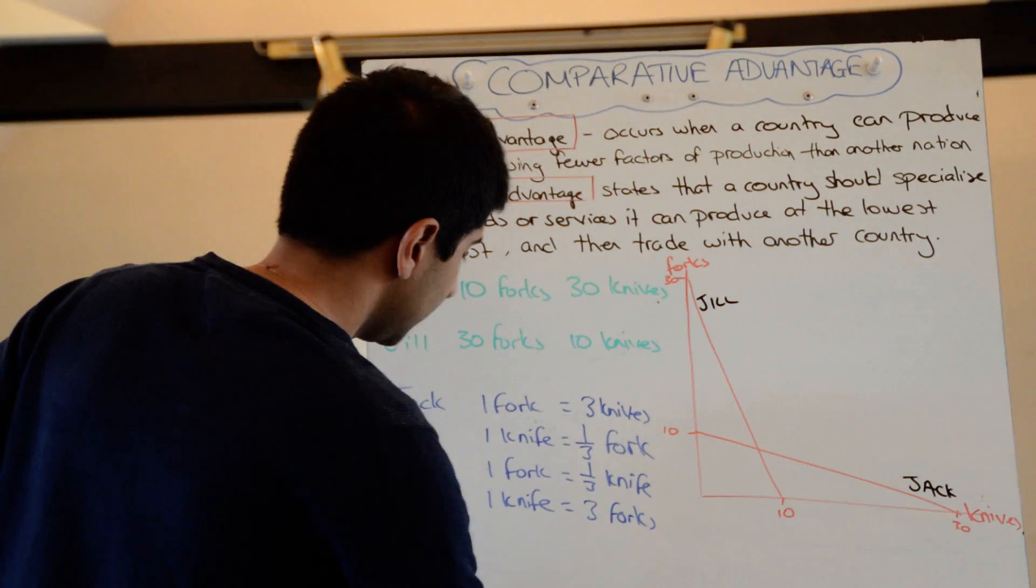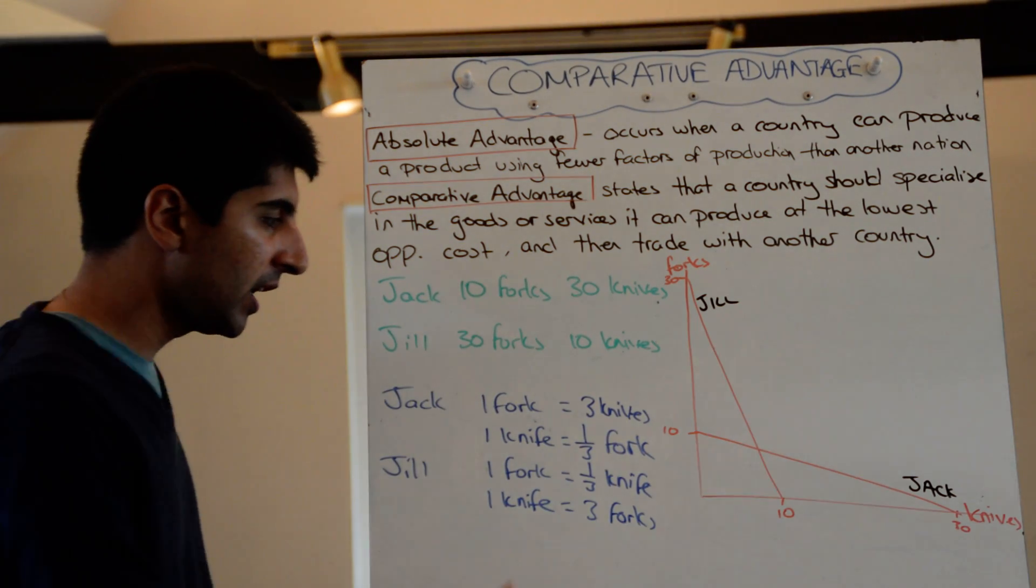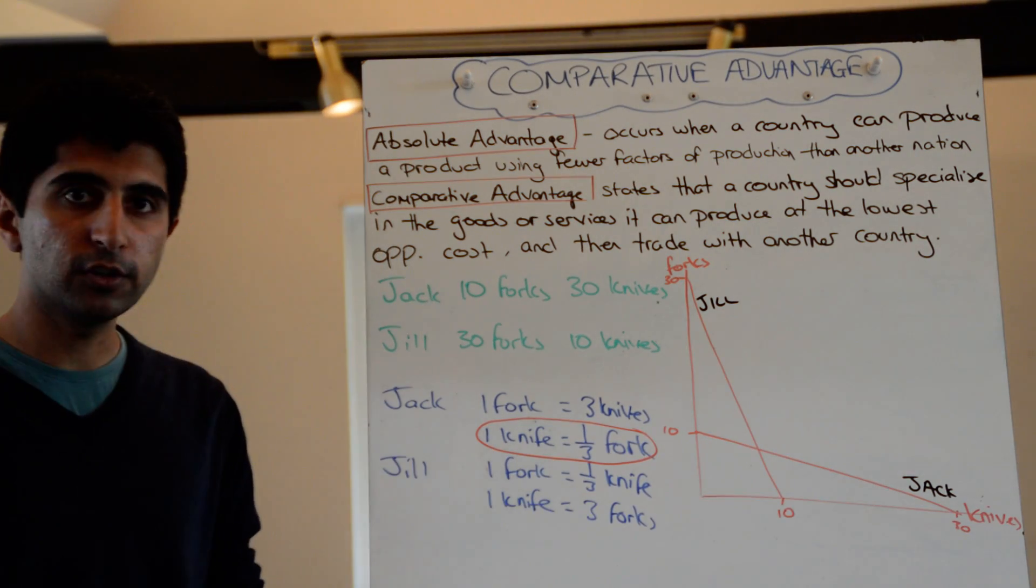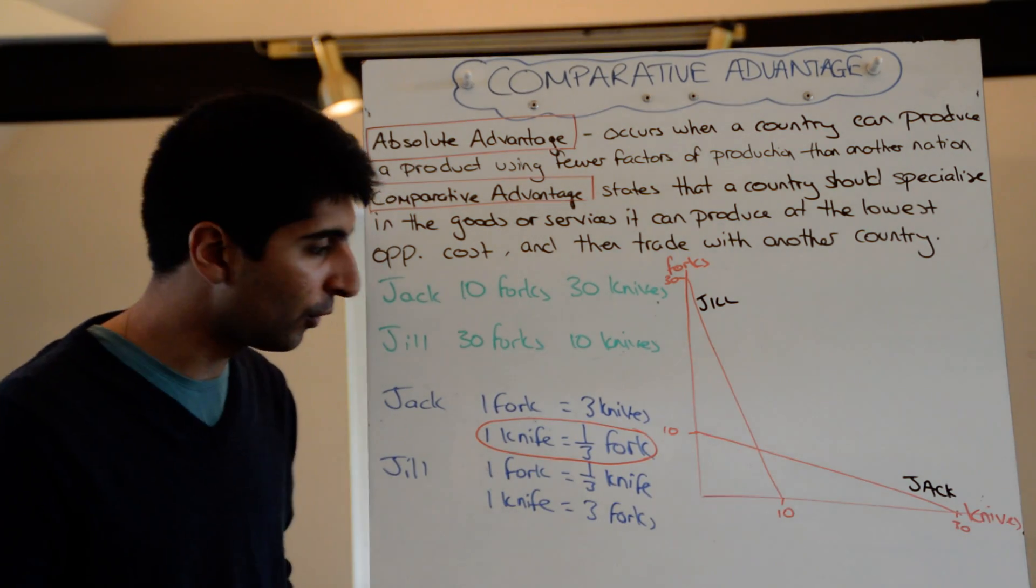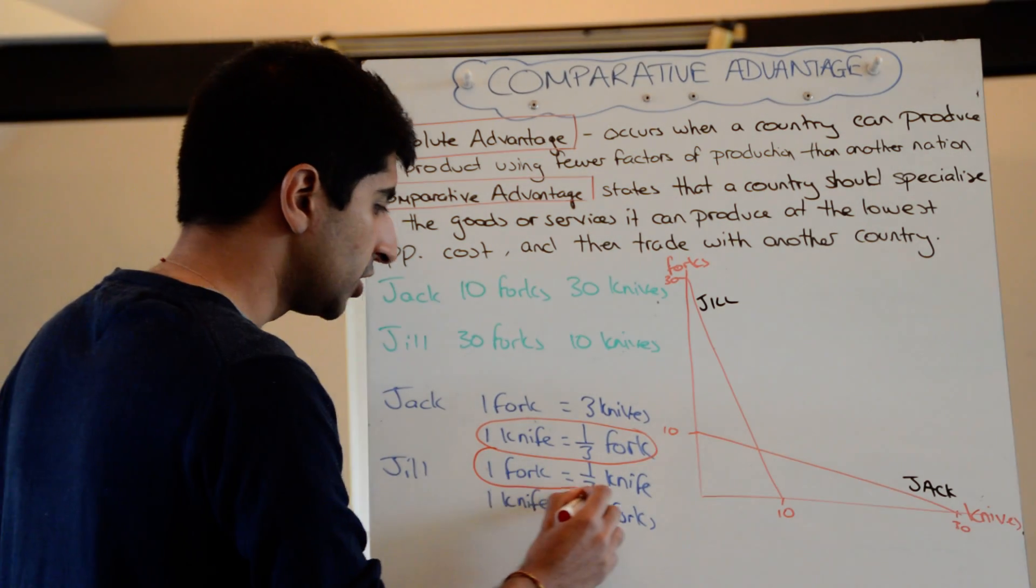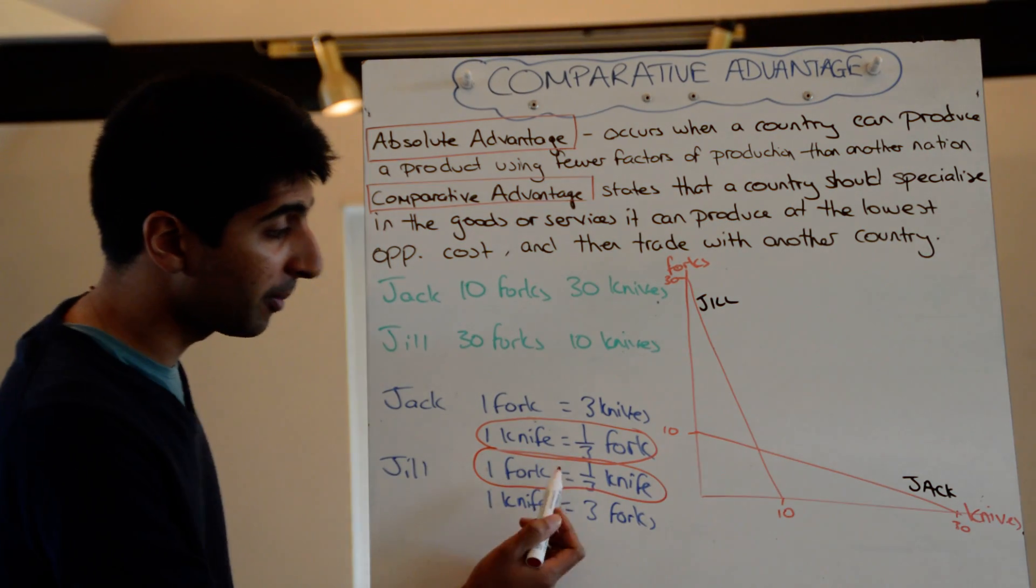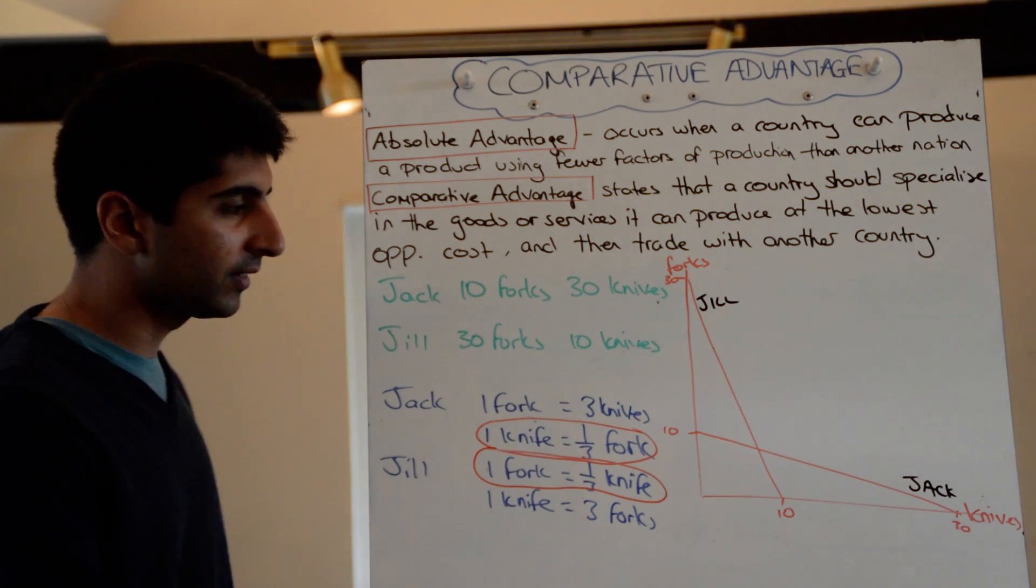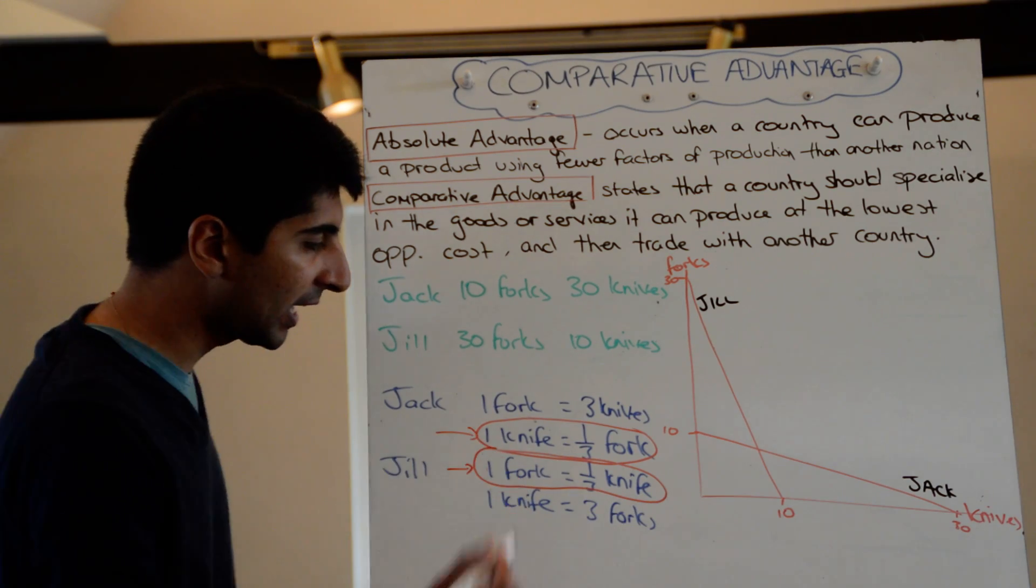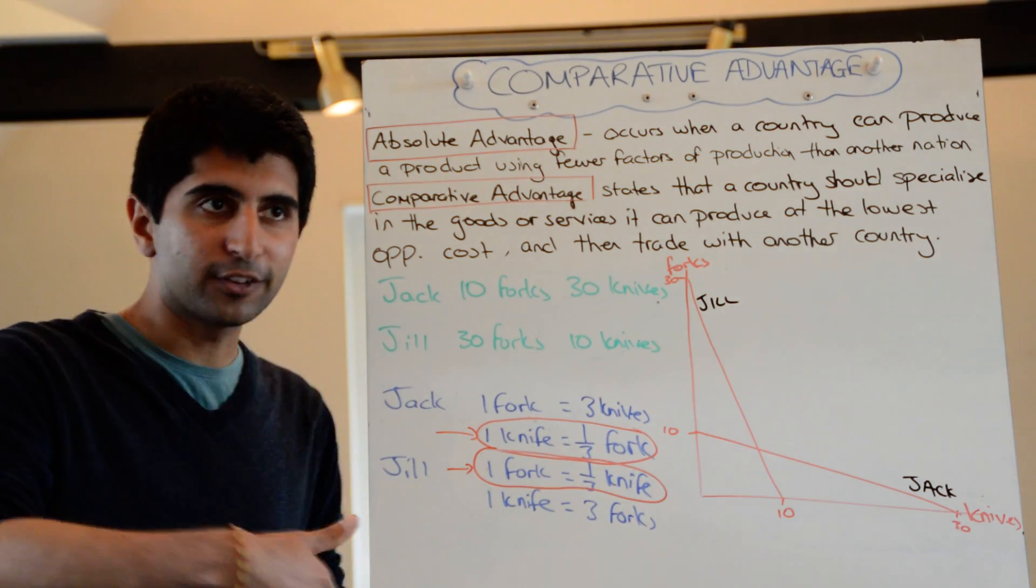So it's pretty clear to see that Jack has got the comparative advantage in knife production. He only has to give up a third of a fork, whereas for Jill to produce one knife she has to give up three forks. Jill has the comparative advantage in fork production where she only has to give up a third of a knife, whereas Jack has to give up three knives. So therefore Jill should specialize in producing forks, Jack should specialize in producing knives. Simple stuff. Let's go beyond that.